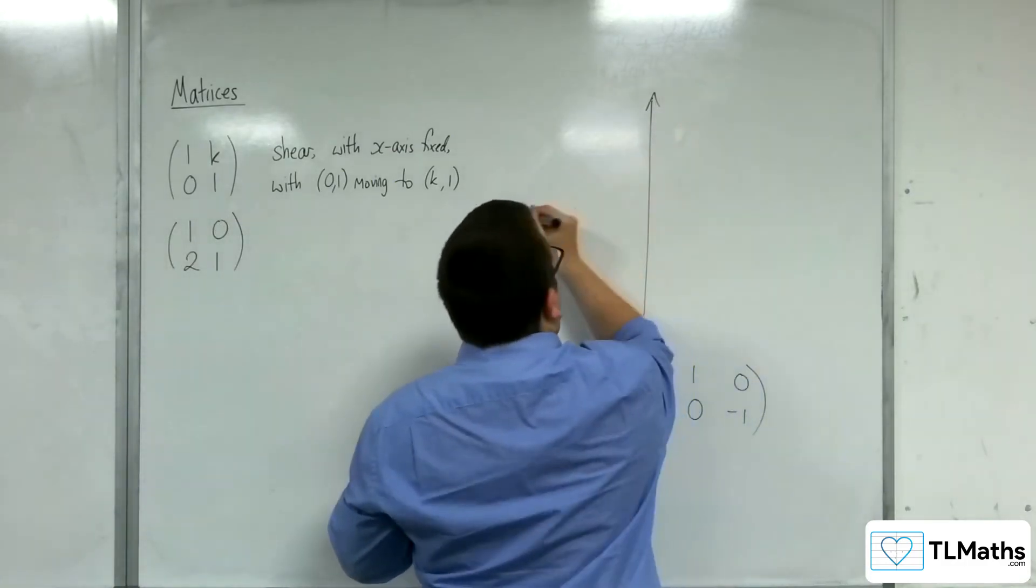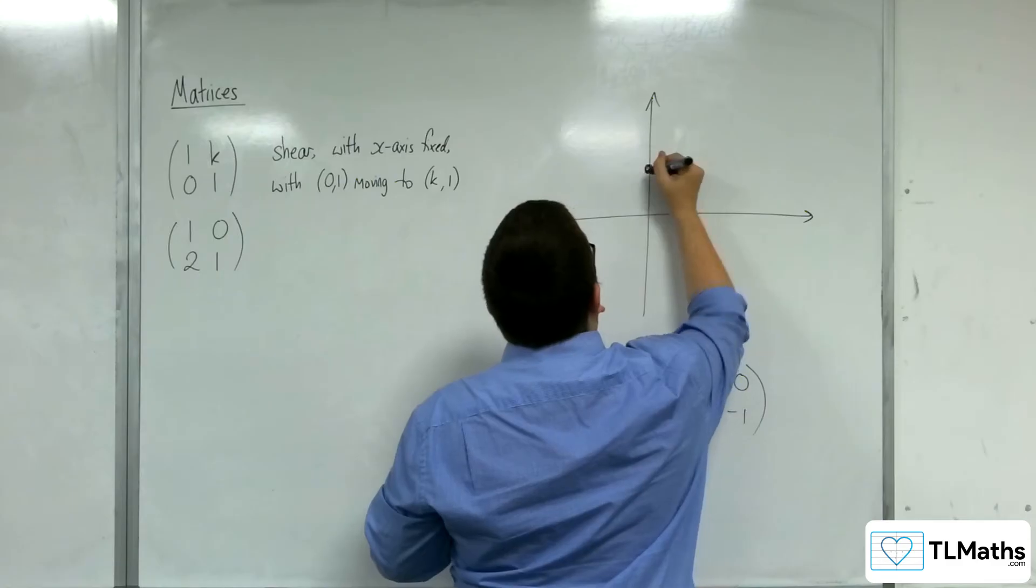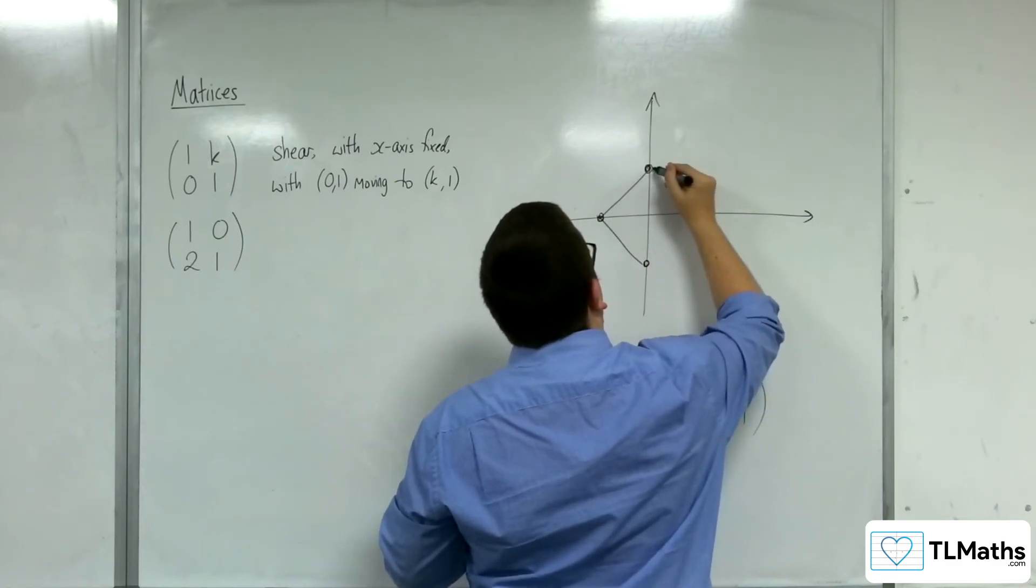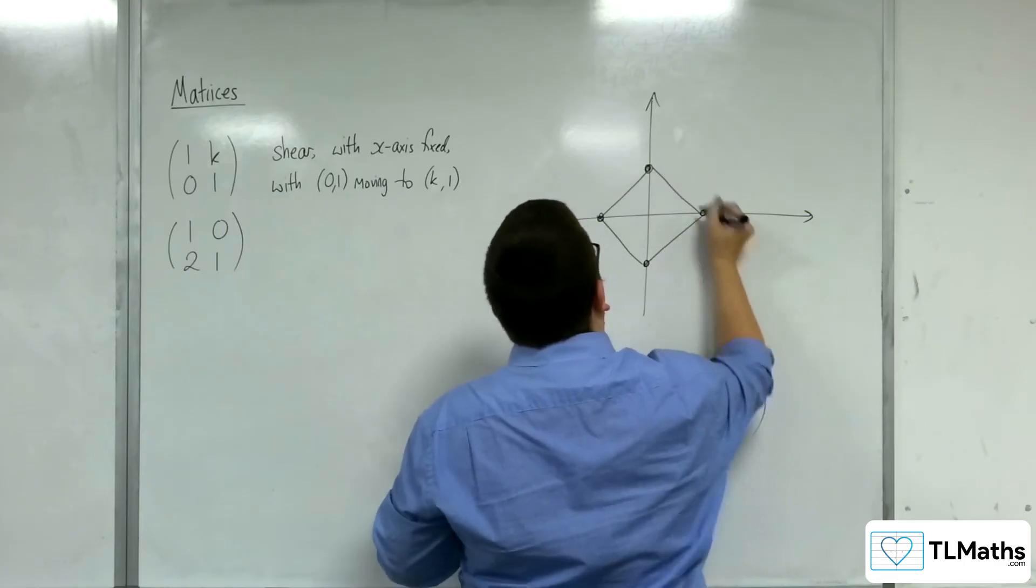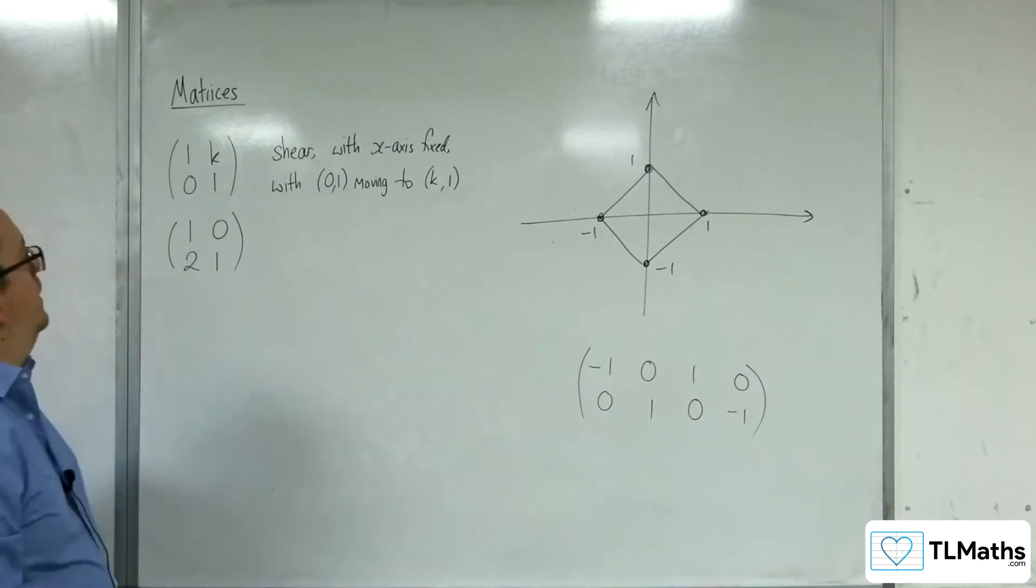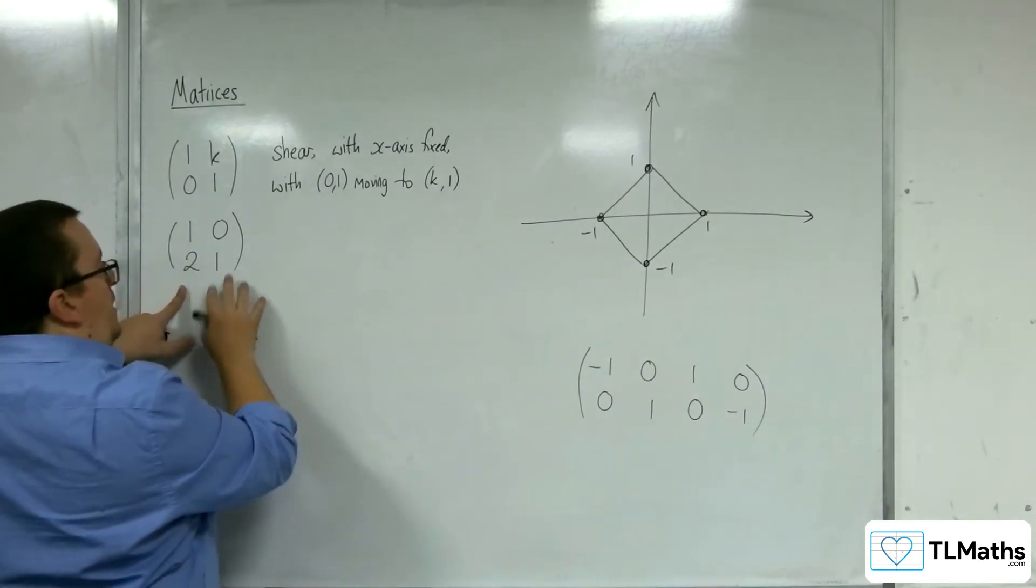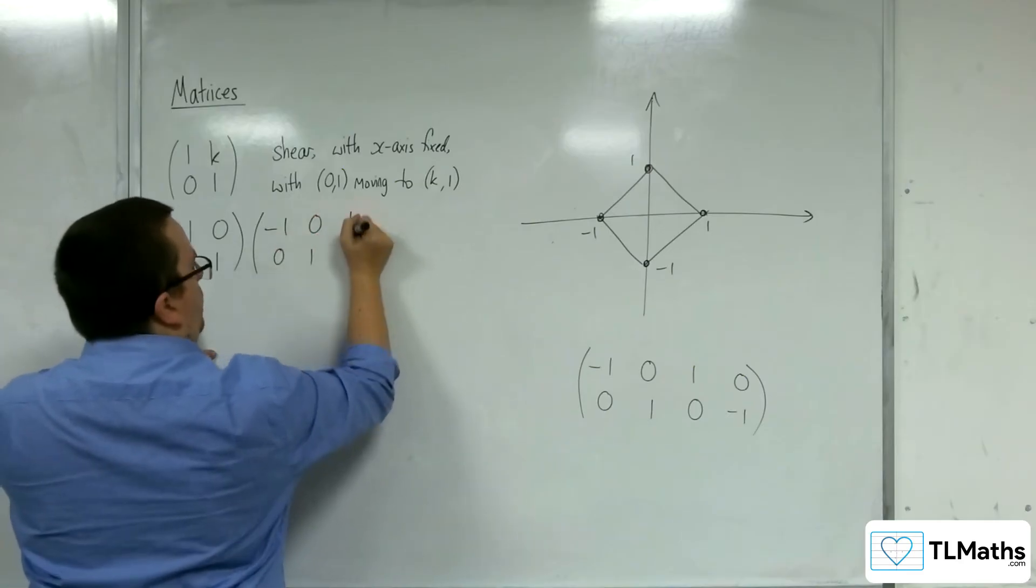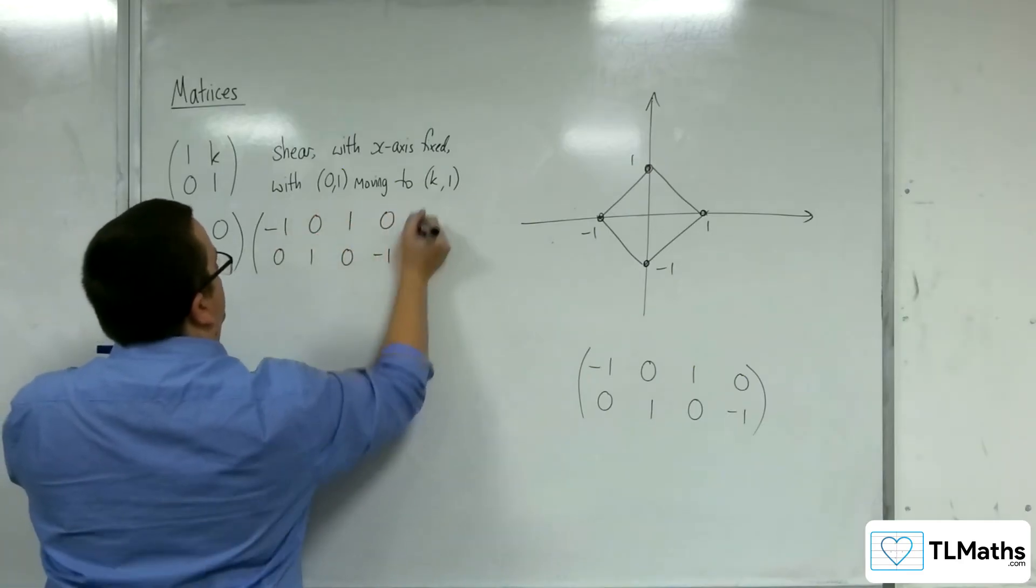So we'll use the same shape. So we're now going to apply this matrix to minus 1, 0, 0, 1, 1, 0, 0, negative 1.